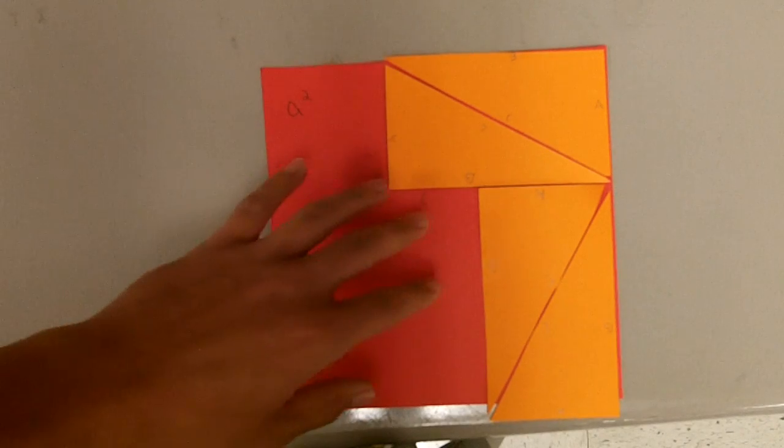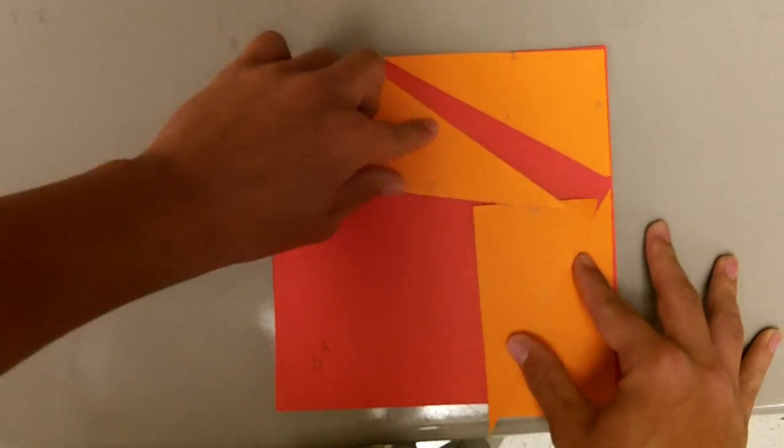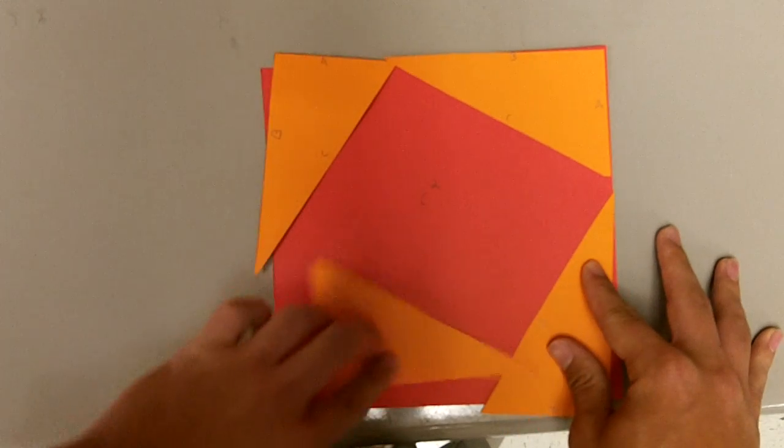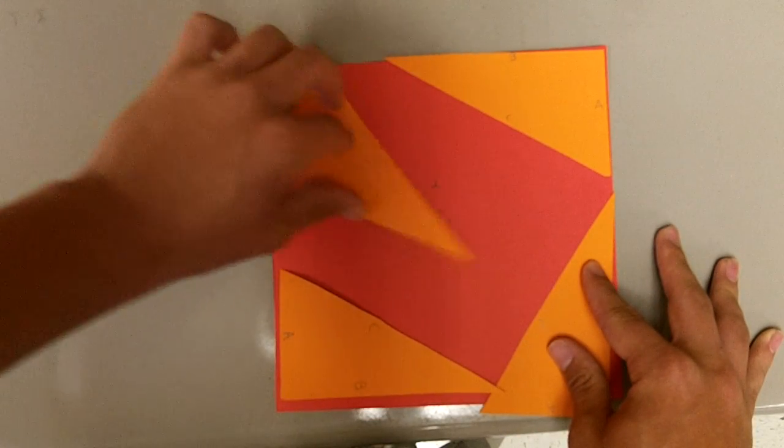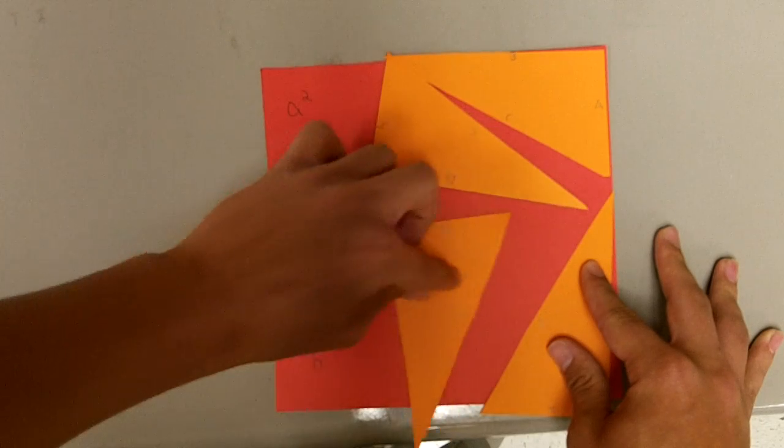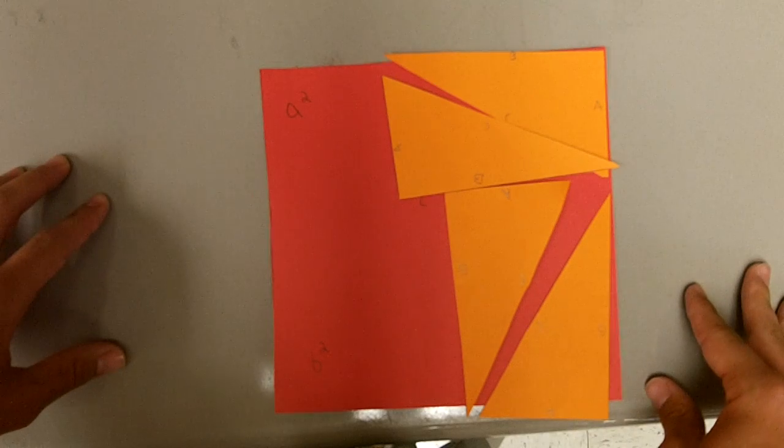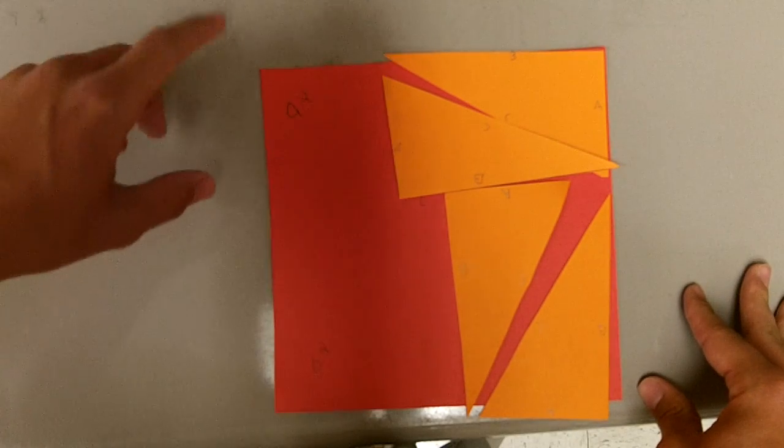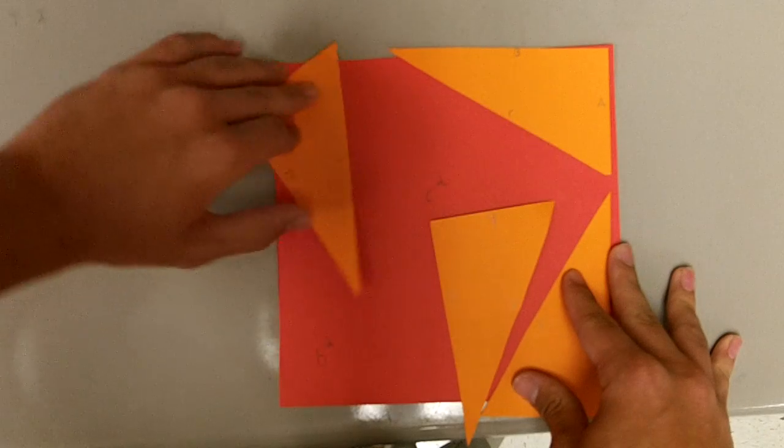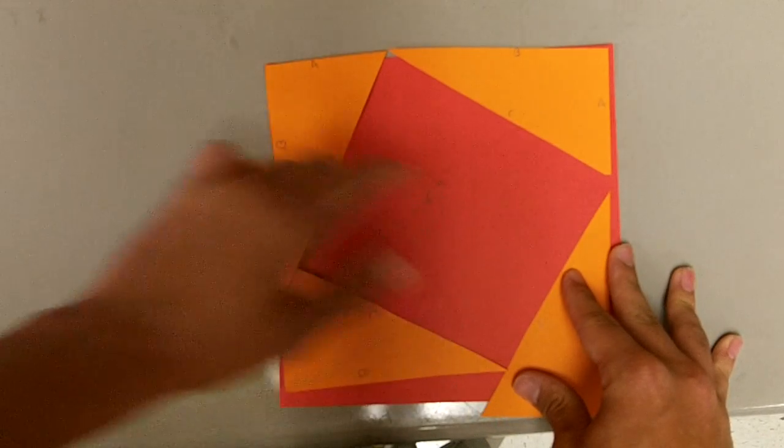This is the same area as before when we had C squared. So C squared is equivalent to A squared and B squared, which proves the Pythagorean Theorem: A squared plus B squared equals C squared.